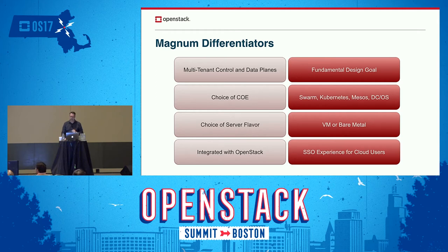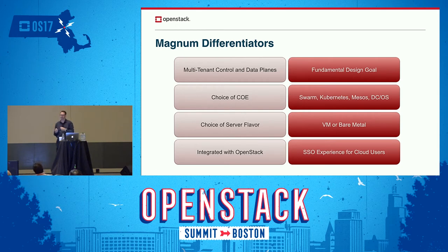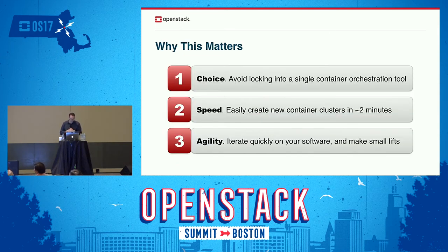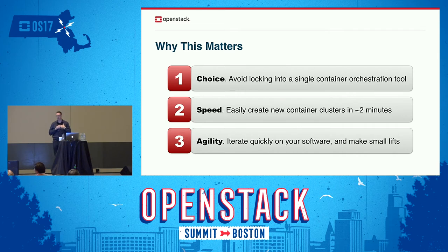The fourth differentiator is that it's integrated with OpenStack. If you've already got an OpenStack cloud and users with Keystone credentials, they use those same exact credentials to create Magnum clusters — they don't need something new. So why Magnum at all? First, it gives you the choice of what container orchestration tool works best for you. Second, it allows you to create those clusters with a degree of speed and simplicity that is unmatched. And third, it will allow your developers to iterate on your software more quickly and more easily than trying to do this by hand.